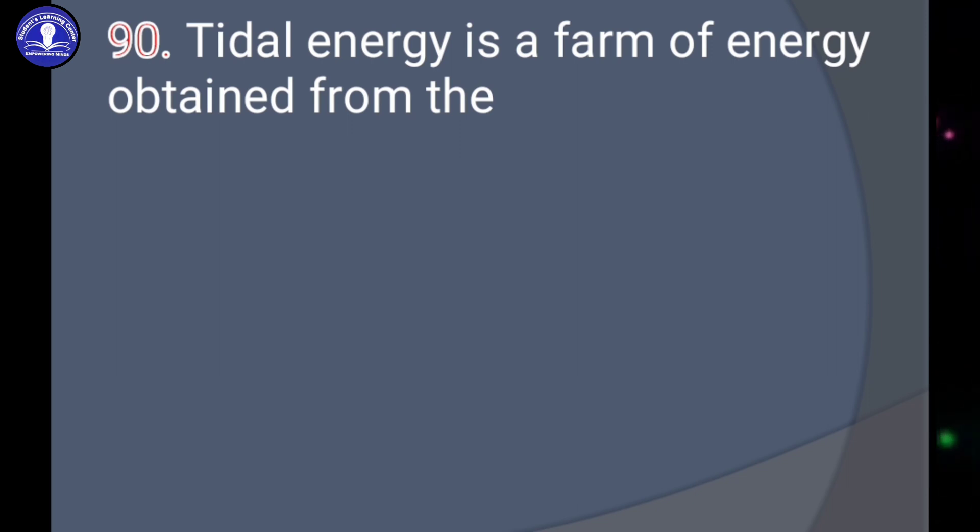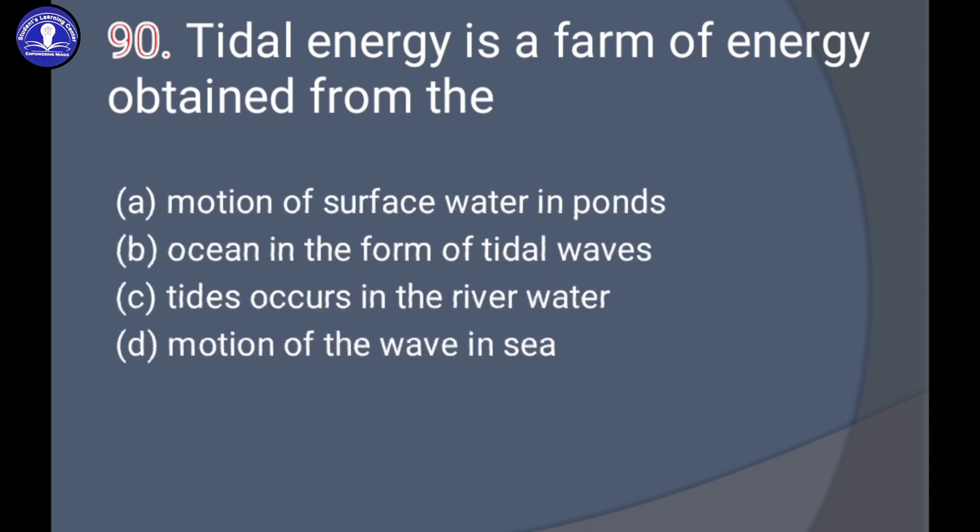Next question: Tidal energy is a form of energy obtained from the motion of surface water in ponds, ocean in the form of tidal waves, tides occurs in the river water, or motion of the wave in sea. Tides are the rise and fall in the water. Tides occur because of the moon and sun's gravitational force. The answer is option B, ocean in the form of tidal waves.